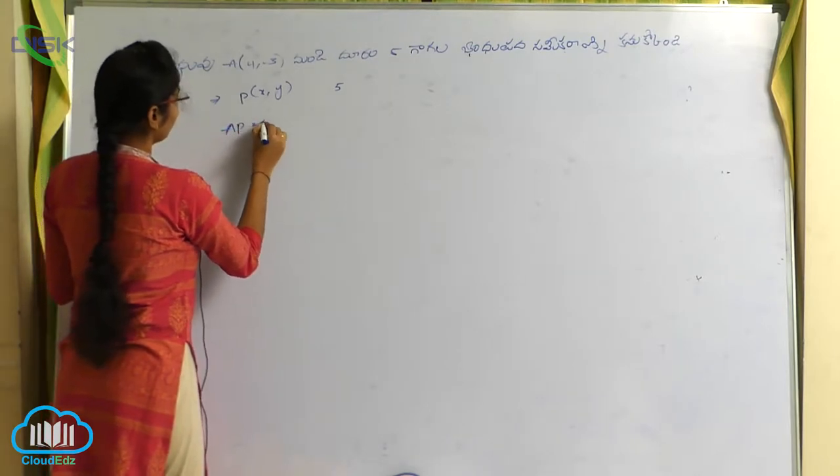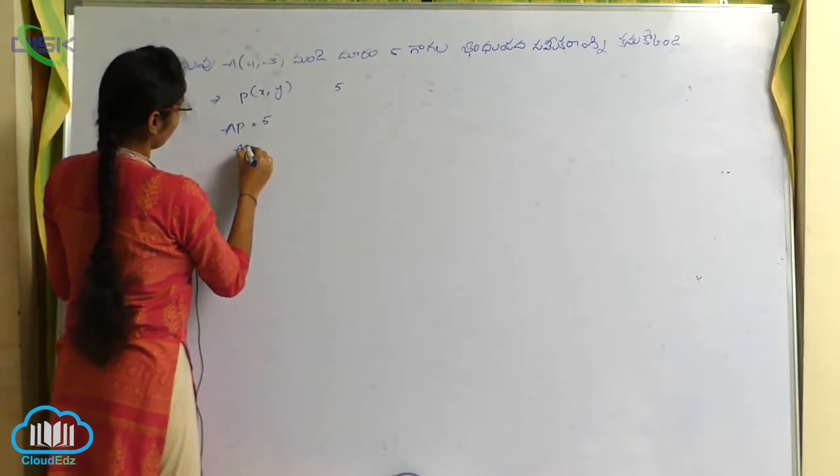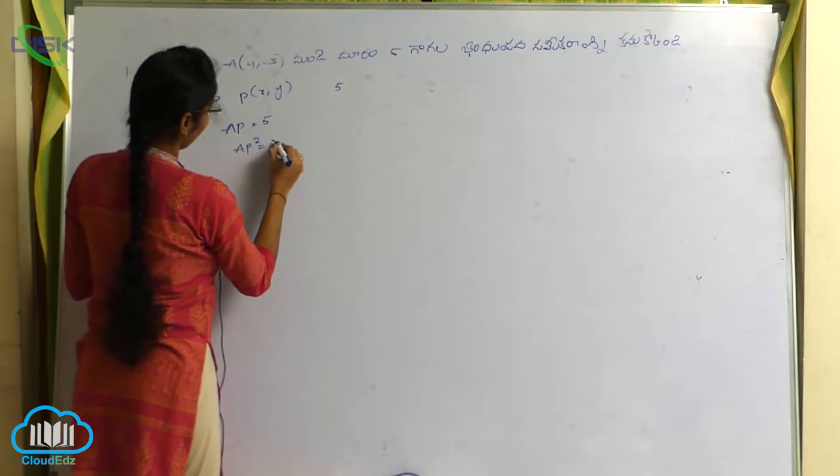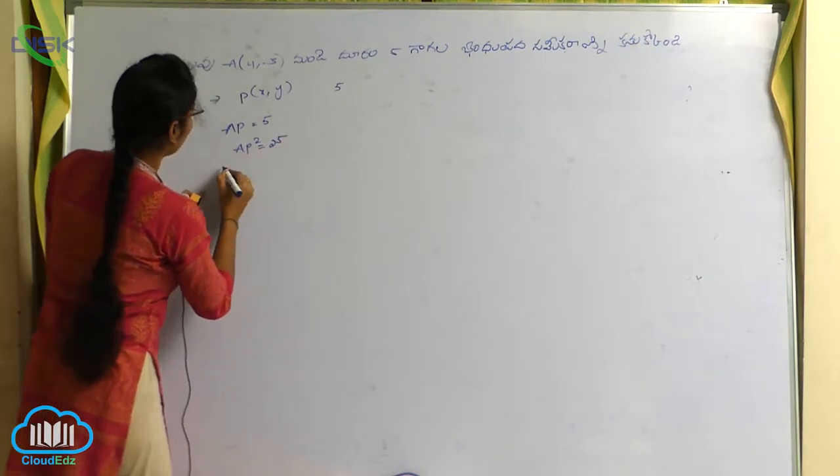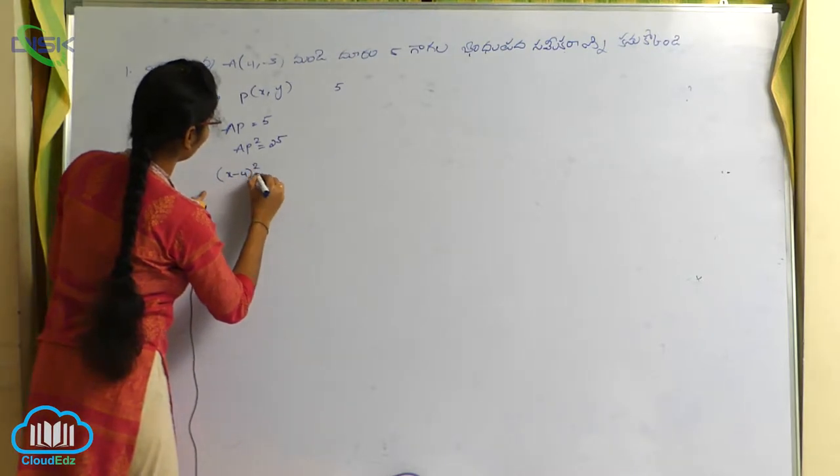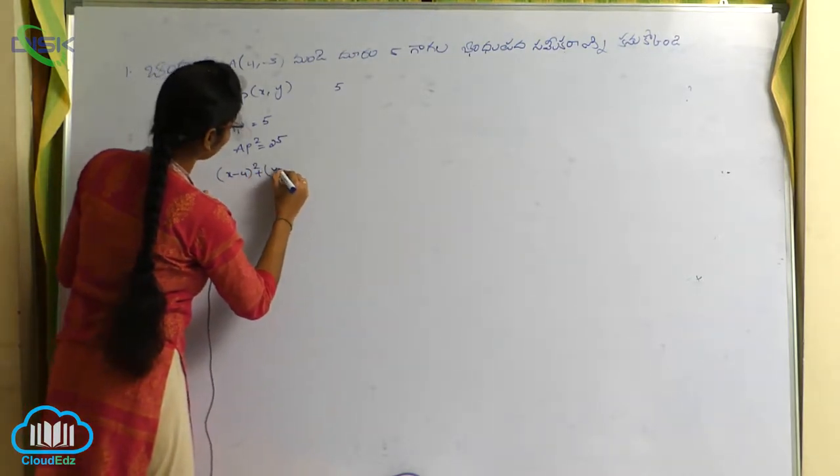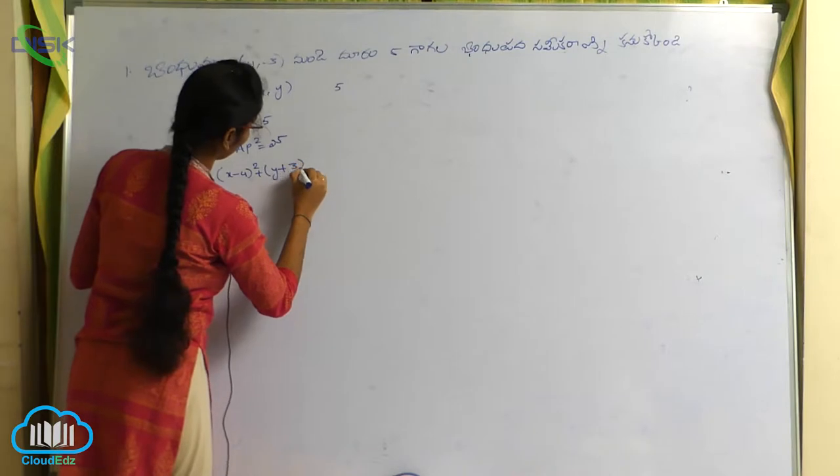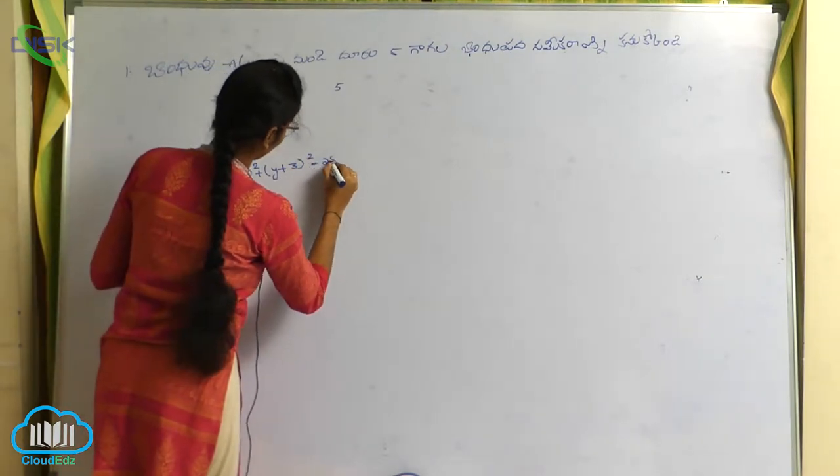AP equals to 5, AP square is equals to 25. AP means x minus 4 whole square plus y minus of minus 3, anute y plus 3 whole square is equals to 25.